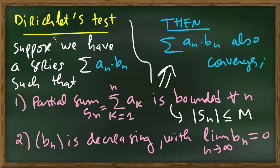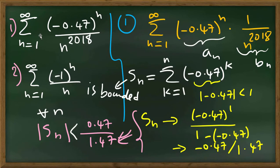Now, by Dirichlet test, we conclude that sigma a_n b_n converges. Meaning, sigma minus 0.47 to the power n over n to the power 2018. This series converges.